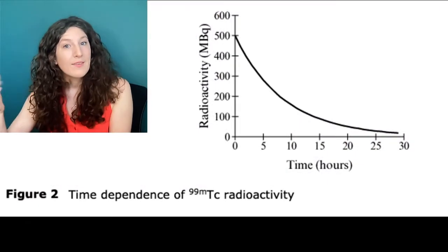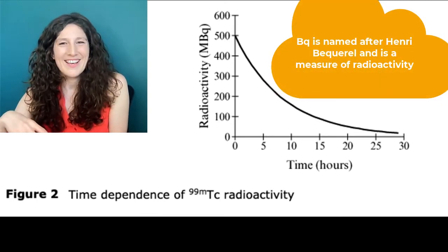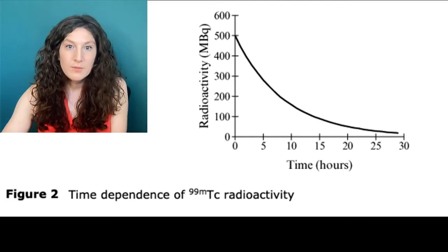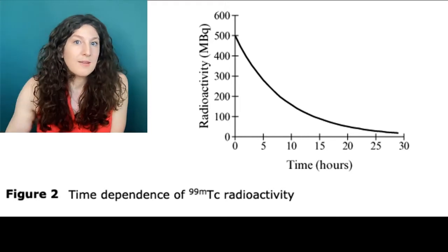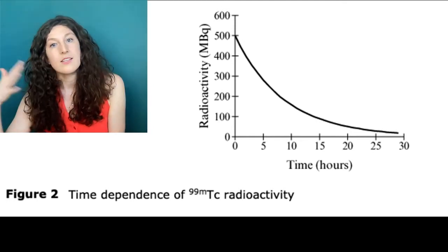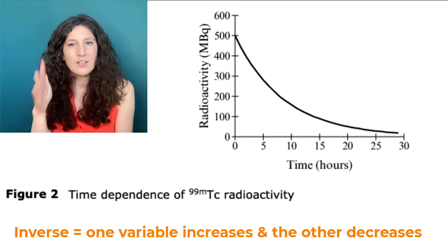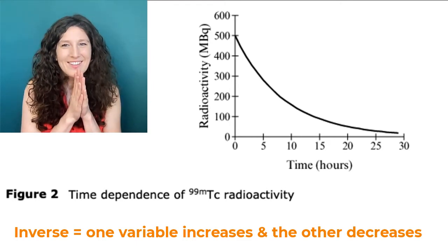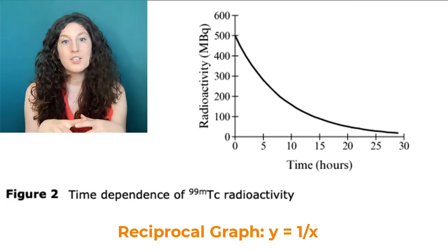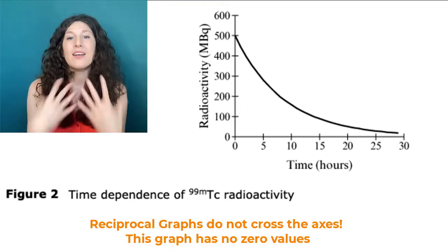Back to our figure. We have mega, and then BQ — which you're not expected to know, but as a fun fact, BQ is named after Henri Becquerel and is a measure of radioactivity. We can determine that from the label of the y-axis. So we have our two variables and units, and we can say our control is probably time zero, that point at which we're at maximum radioactivity. Now let's look at the trend: we see an inverse trend — as time increases, radioactivity decreases — but it's not quite a straight line. That curve is called a reciprocal graph, meaning we'll never cross into negative values. The relationship is y equals 1 over x: as x (time) goes up, y goes down, but never past zero.